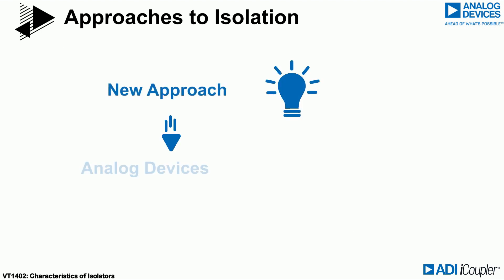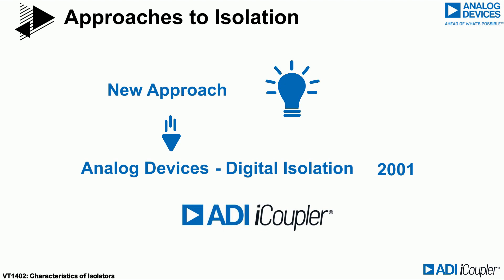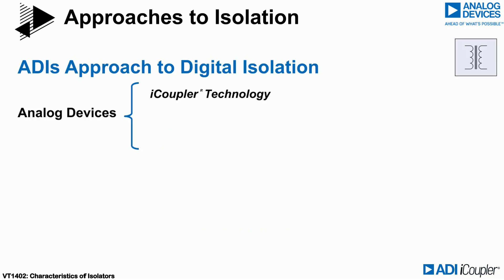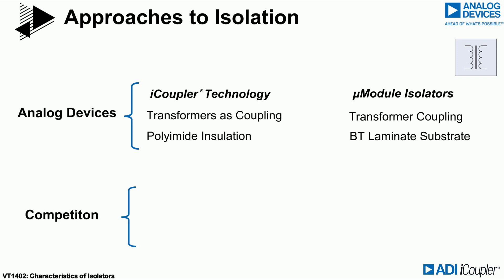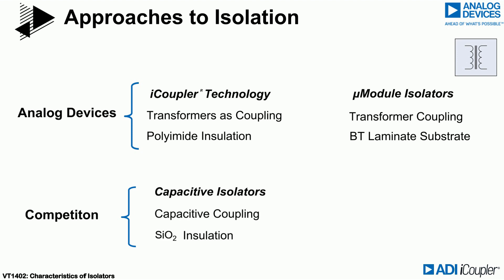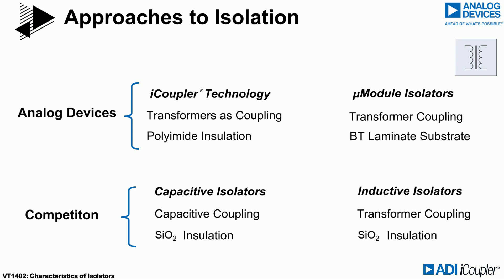A new approach invented by Analog Devices, digital isolation, was introduced to the market in 2001 as I-coupler technology. These devices use microtransformers fabricated on chip as the coupling element, with polyimide insulation between the transformer coils. Analog Devices also offers micromodule isolators that use transformer coupling through a BT laminate substrate. Over time, other approaches have been used to produce digital isolators — some use capacitive coupling with silicon dioxide, while others use transformer coupling with silicon dioxide. The pros and cons of each approach will be discussed in later sections.